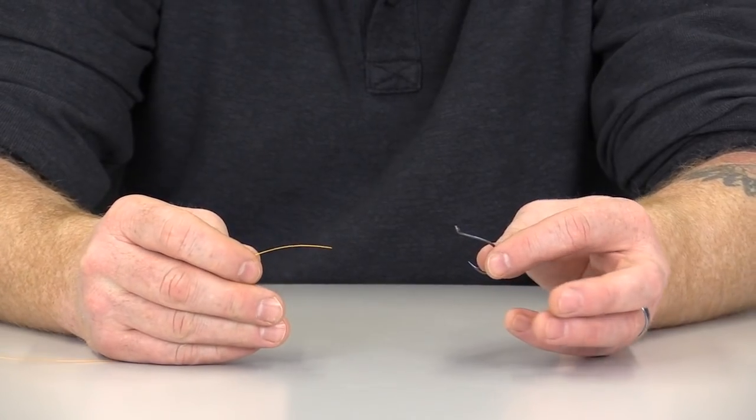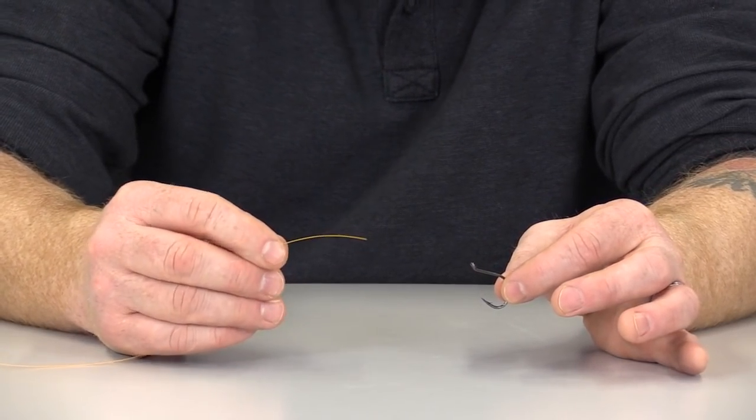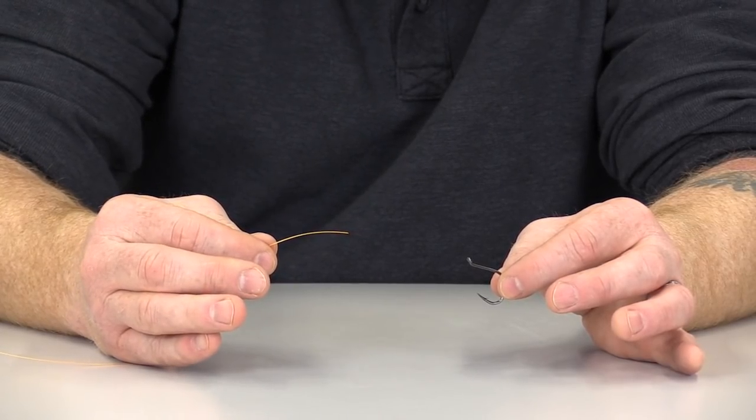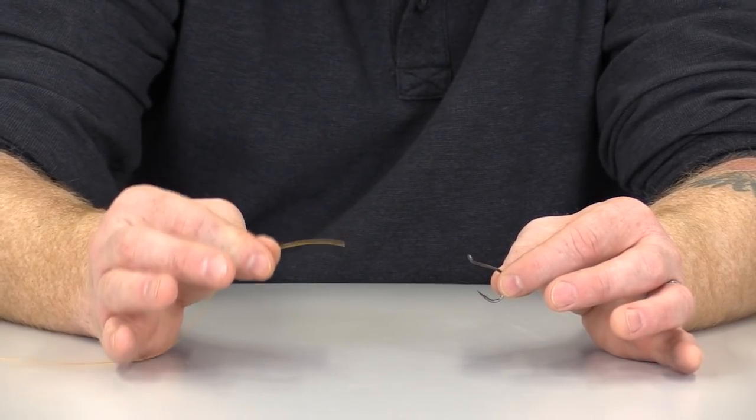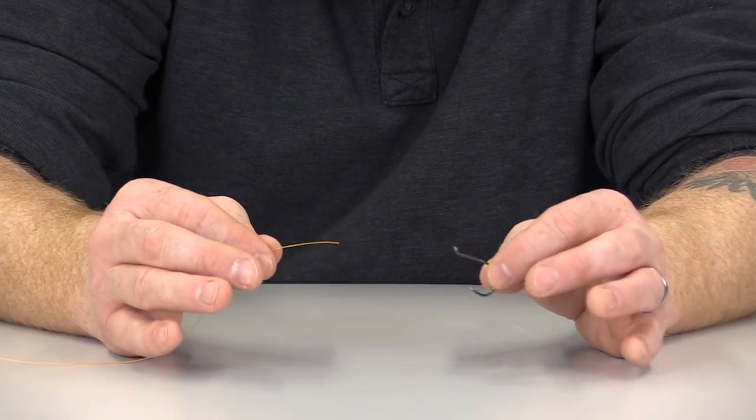For the egg loop knot, we've got a couple components here. We've got our 3-ought octopus hook with a slightly upturned eye here. And in my right hand, I've got a section of 20-pound test monofilament line. For demonstration purposes, we're using orange.